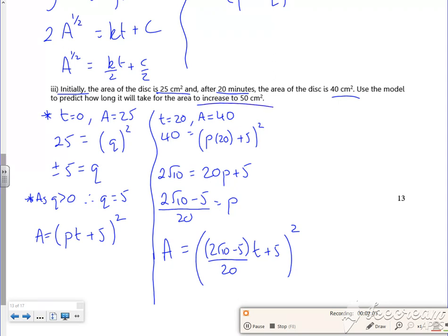So we're going to find out the time for it to increase to 50. I've used my information to find the two unknown constants, and now I'm using it to find t. So I've got (2√10 - 5)/20 times (t + 5) all squared.